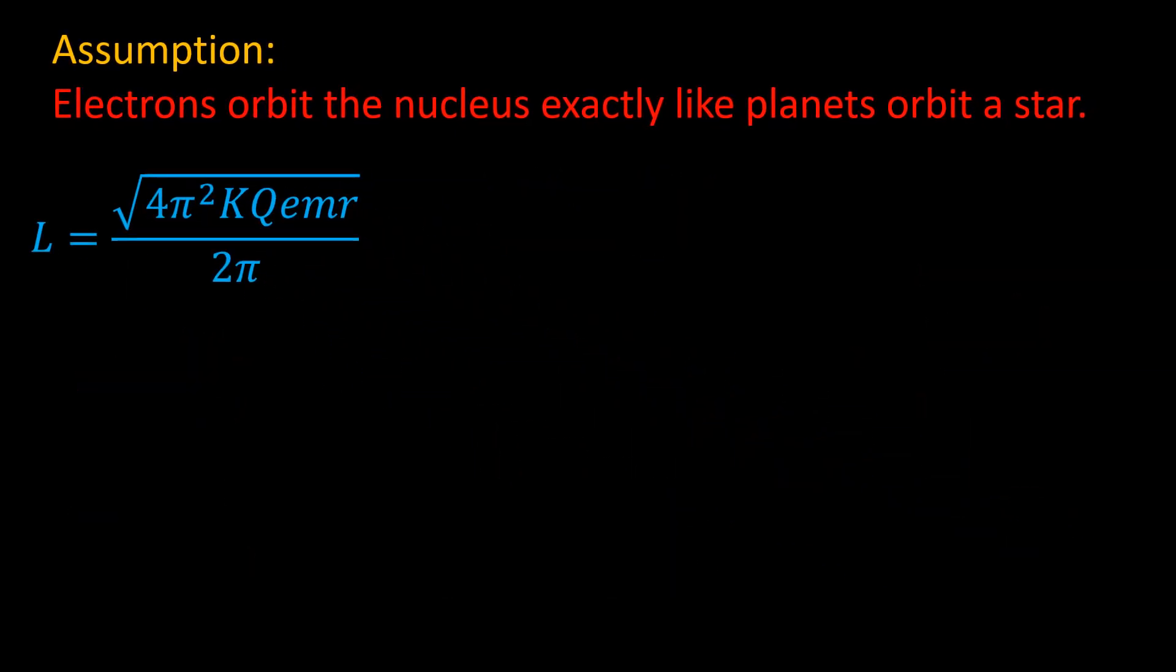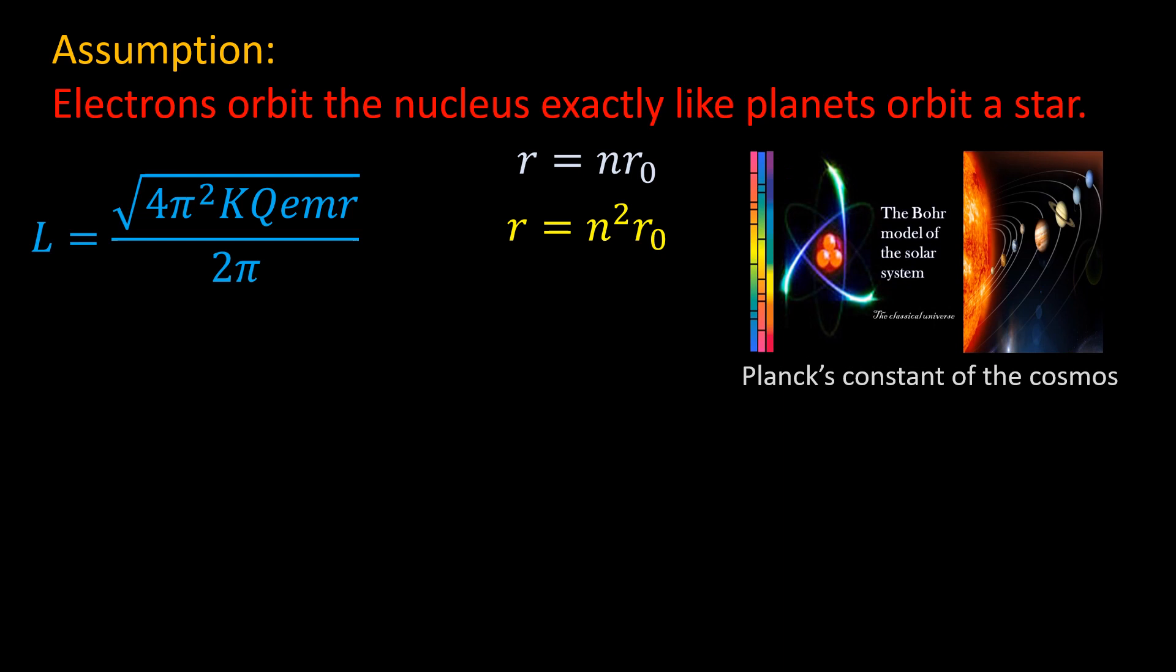Remember, we started by assuming that electrons are in orbits like planets. When we look at a solar system, we see planets in discrete orbits, which therefore implies discrete radii. So we can write that the radius of any electron is an integer multiple of the first radius R0. But for this video, we shall use R equal to N squared times R0. Visit my other video titled Planck's Constant of the Cosmos for any clarification. This derivation is there in more detail.